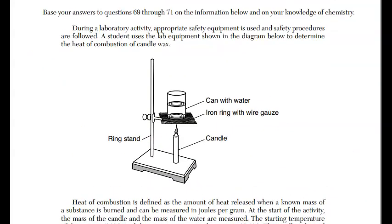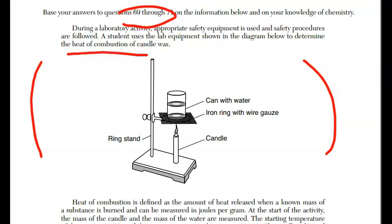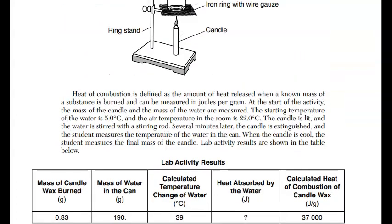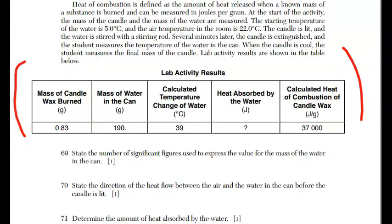We're checking out 69 through 71. We have a laboratory setup. We're burning a candle. You'll notice we have a can with water. And we're looking for the heat combustion of candle wax. And there's a lot of information here as well that you would want to read through. You got a picture. You got a paragraph to read and a data table.